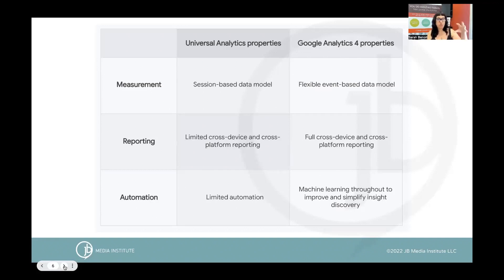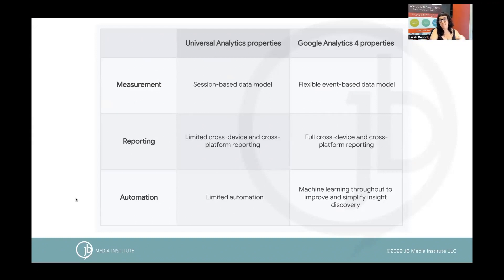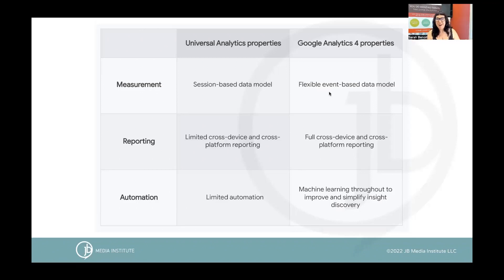The AI has to do with the system tracking everyone's behavior on your website and the events they're completing, then using that AI to predict certain things - like what might happen in the future with your website based on people's current behaviors. Machine learning is a big part of GA4. We've got cross-device and cross-platform reporting, and we're moving into the event-based data model. So Google Analytics is changing from a measurement perspective, a reporting perspective, and an automation perspective.